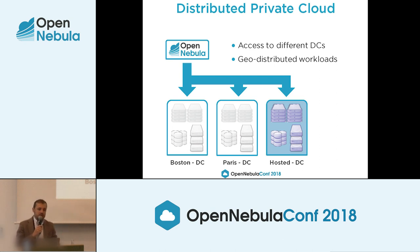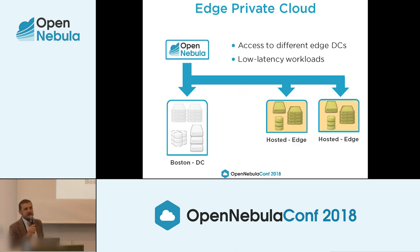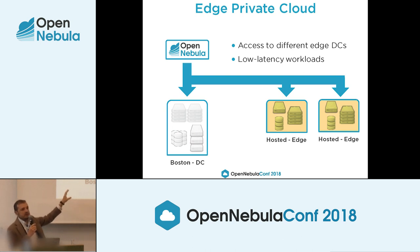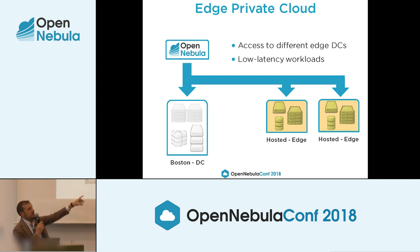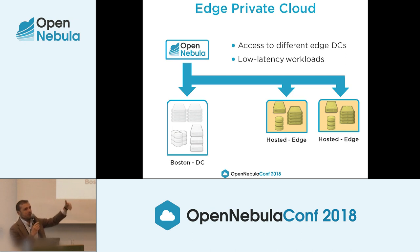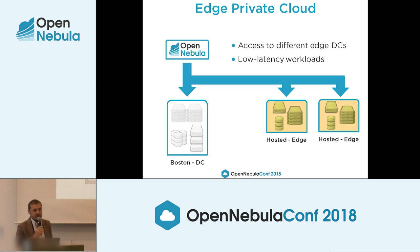There is an interesting variation called the edge private cloud, where you have your own on-premise infrastructure and need to grow with edge resources to minimize latency with your end users. A single OpenNebula instance is able to manage resources locally and access on-demand resources hosted at the edge. Bare metal cloud providers like Packet provide those edge resources, and we are developing the required tooling for on-demand edge access.